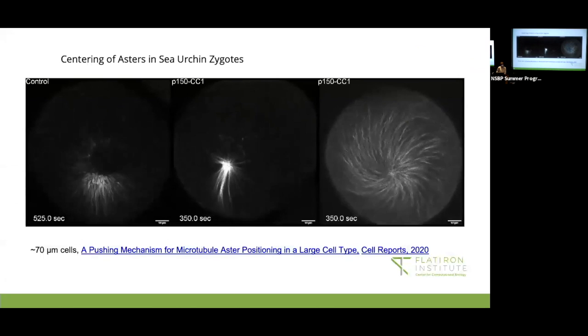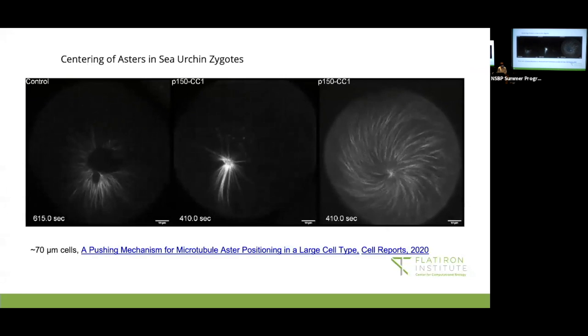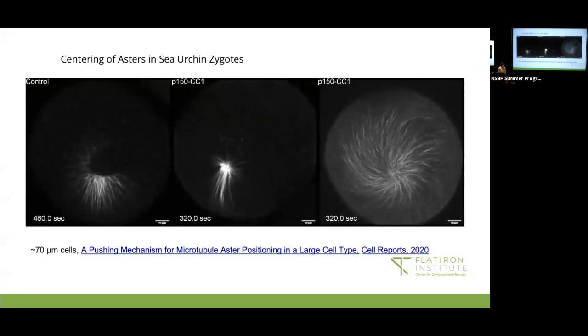So in this video, we can see three different sea urchin cells, and the bright spots inside them are asters. We really want to know how these asters move to the middle of these cells.